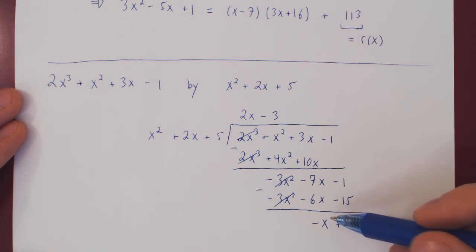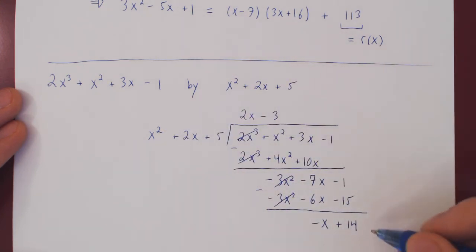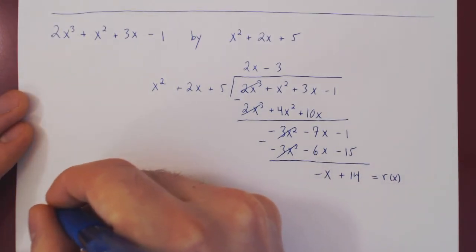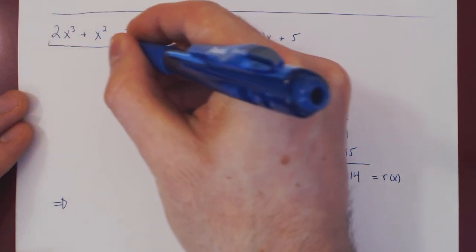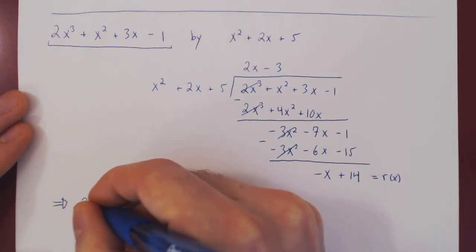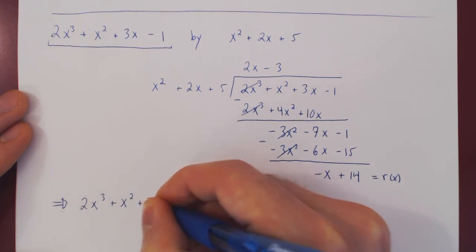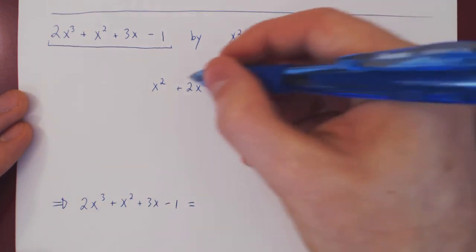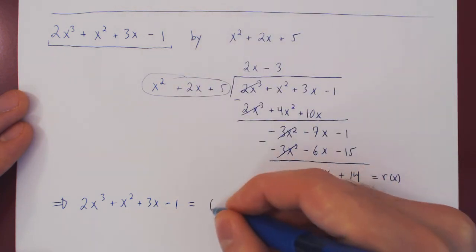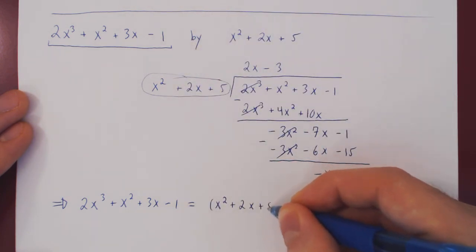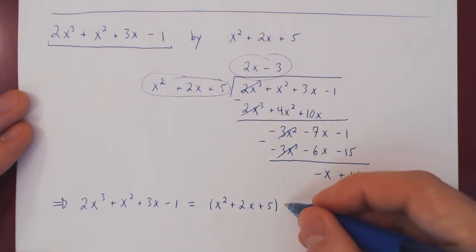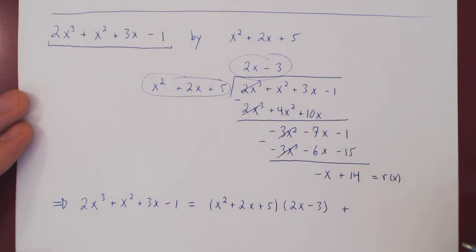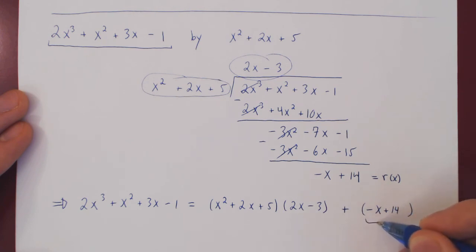Now the degree of the remainder is 1, which is less than 2. So we are done with the long division. This is our remainder. Our conclusion is that 2x cubed plus x squared plus 3x minus 1 equals x squared plus 2x plus 5 times 2x minus 3, plus our remainder, which is negative x plus 14. And that's it — this is long division.